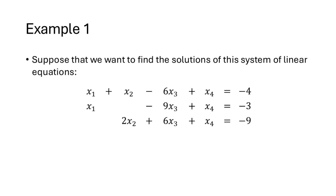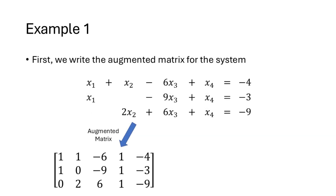For example, let's suppose that we wanted to find the solutions of this system of linear equations. Our first step is to write the augmented matrix corresponding to that system of equations. In this augmented matrix, each row represents one of our original equations — we had three equations, so we have three rows in our matrix. Each column represents the coefficients of the variables, except the final column, which represents the numbers on the right-hand side of the equal sign. The first column represents the coefficients of x1, the second column represents the coefficients of x2, etc.